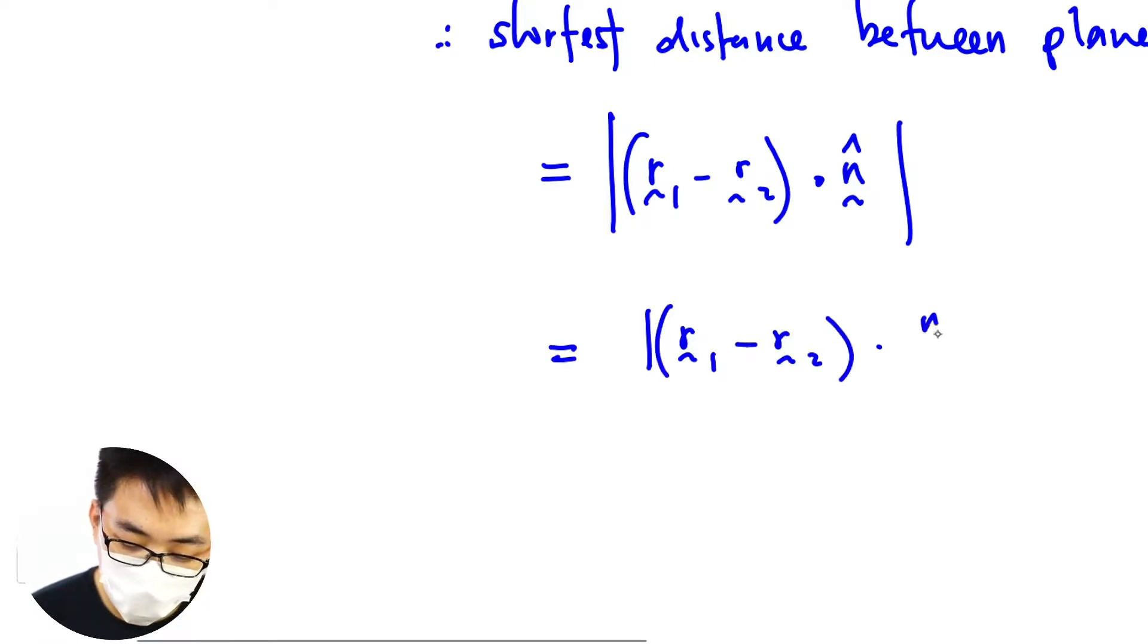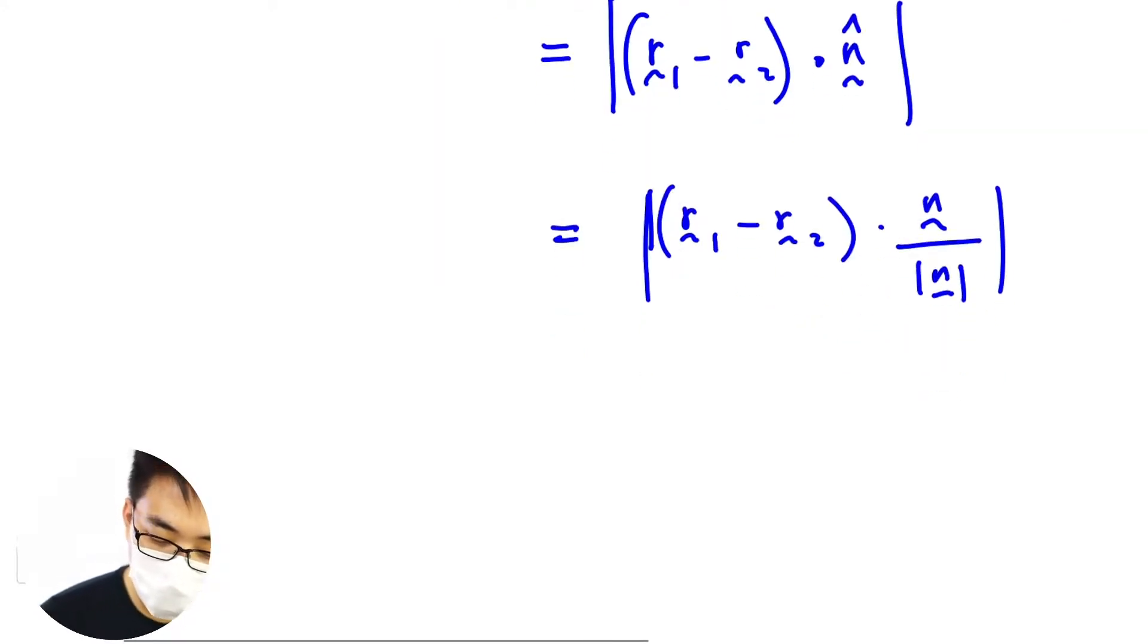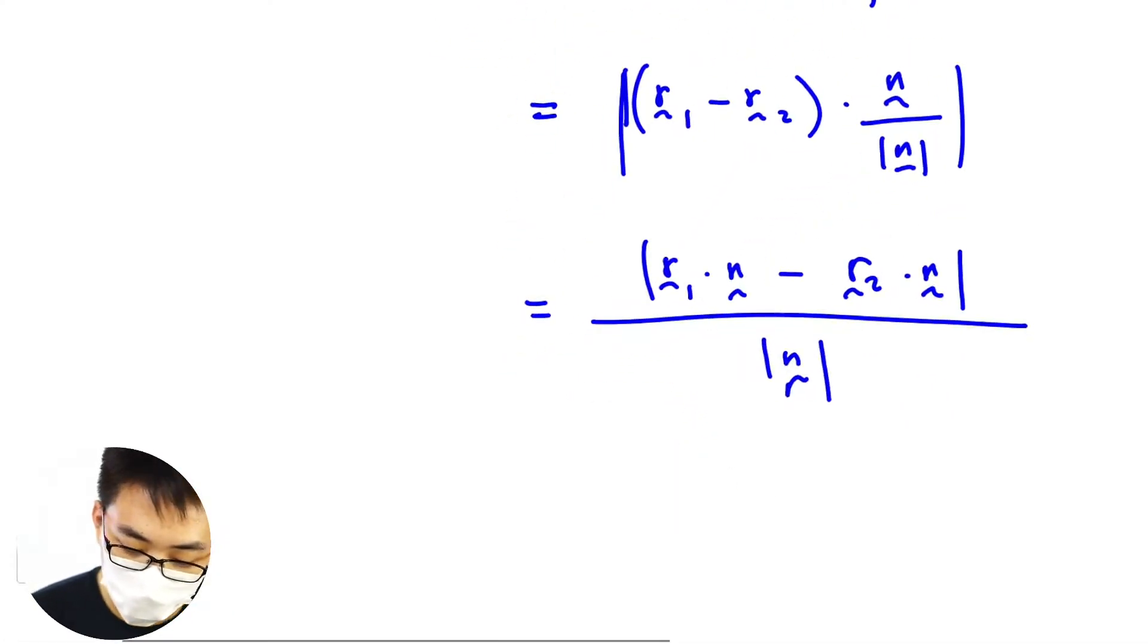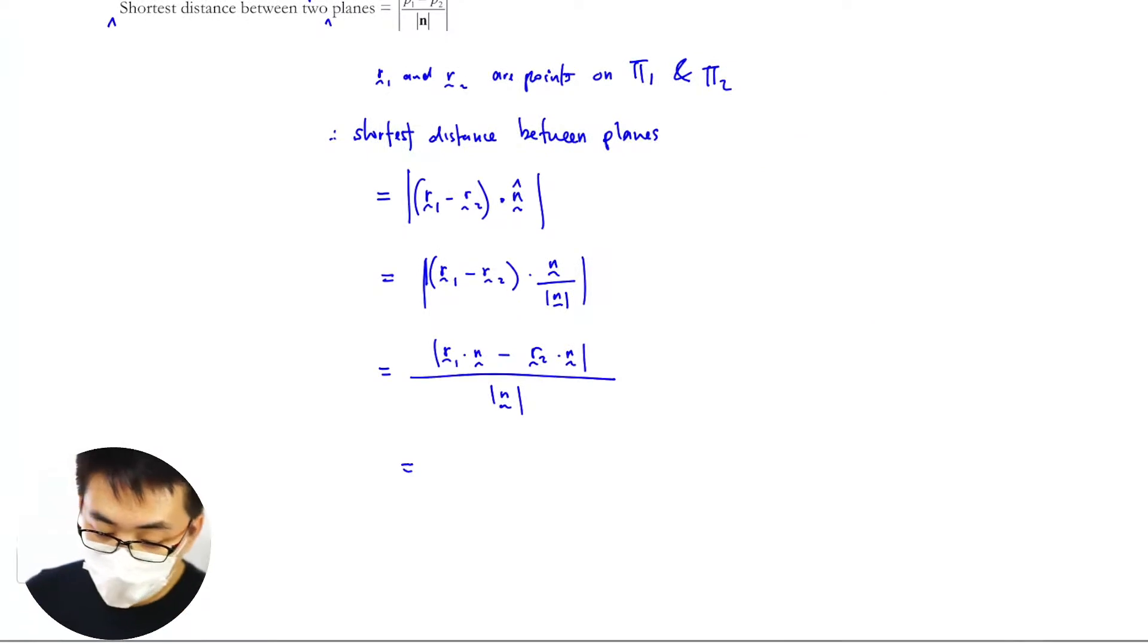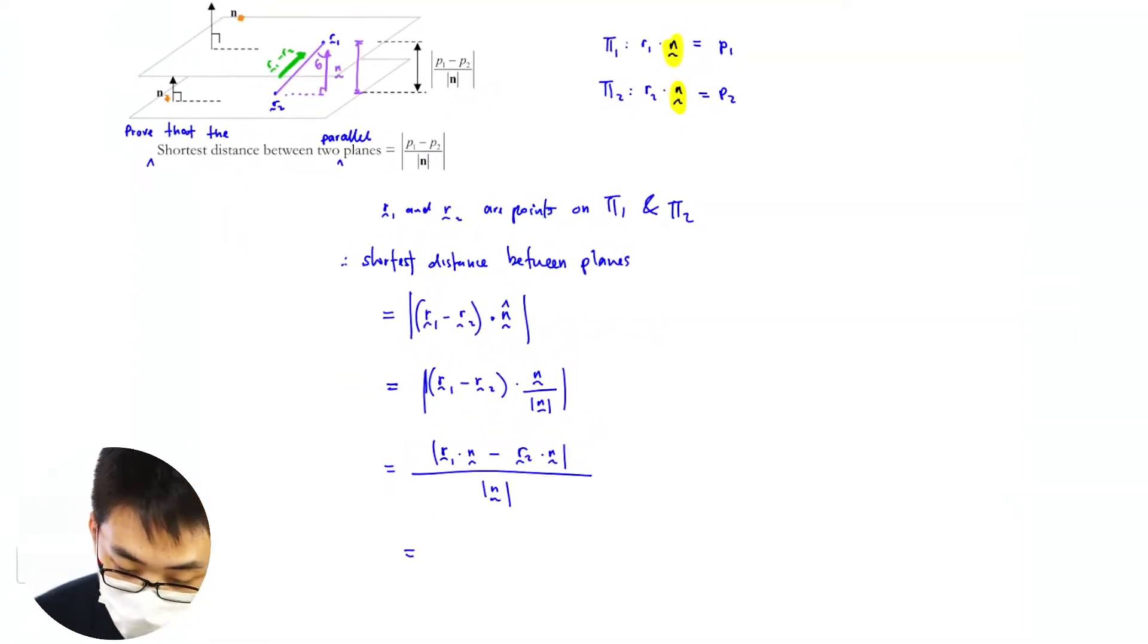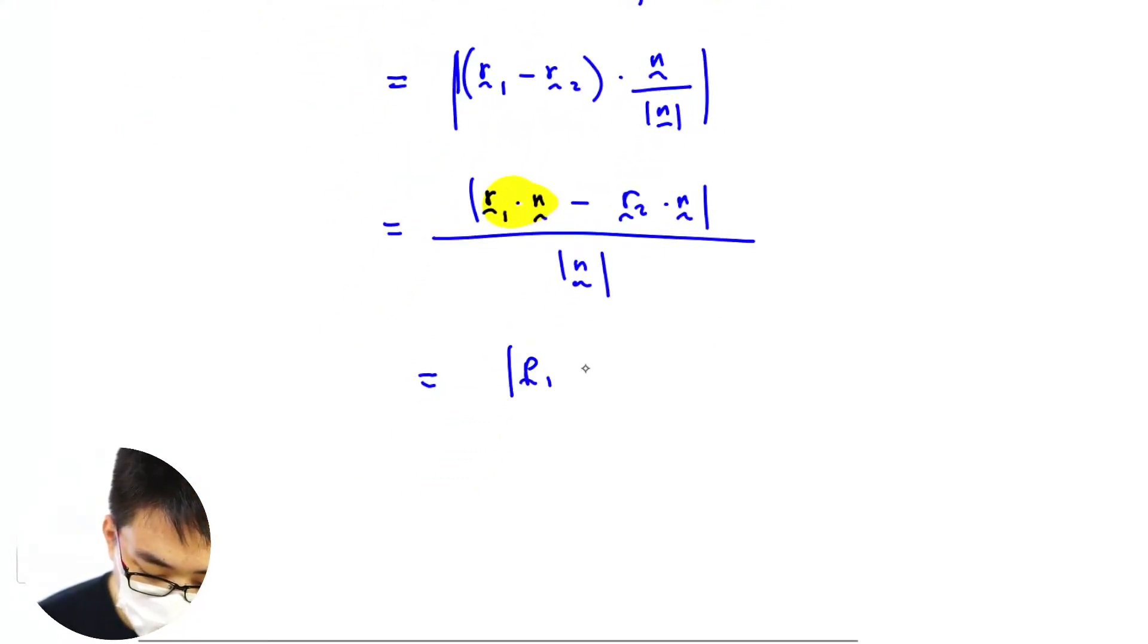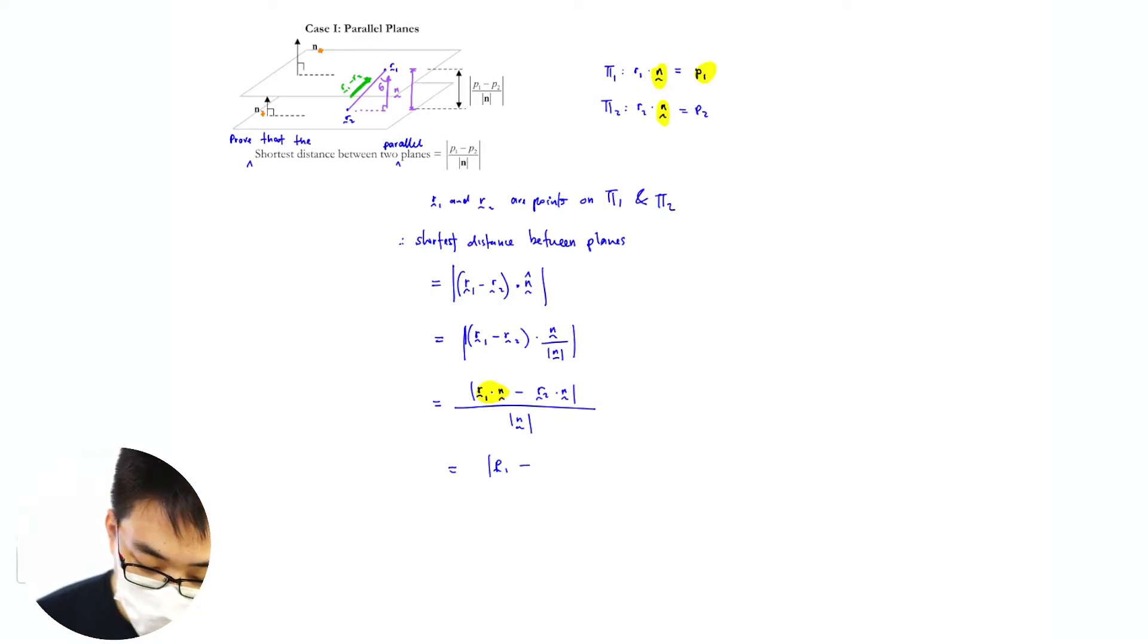r₁ minus r₂ dot with n. Then r₁·n is what? r₁·n is p₁. r₂·n is p₂.